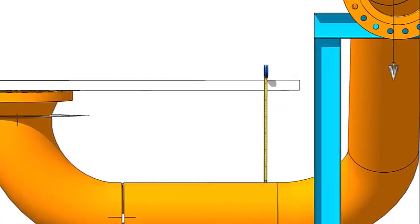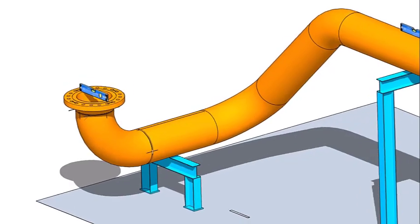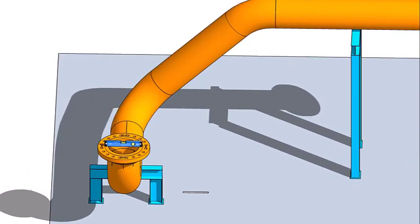If the measurements are equal, that means the face of the flange and the axis of the pipe are parallel. Tolerance may apply as per the procedure. Please watch my previous videos for piping fabrication tolerance.